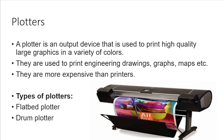A flatbed plotter is used to draw images on paper and uses pens for drawing images. A drum plotter uses a rotating drum or cylinder, and the pens move left and right as the drum rotates. It is used to print large panoflexes.